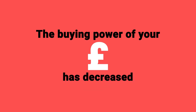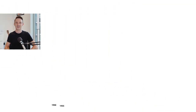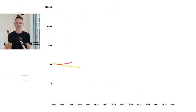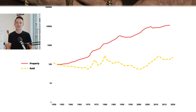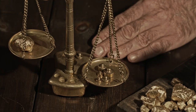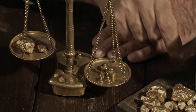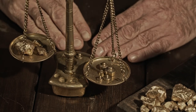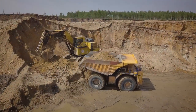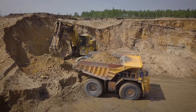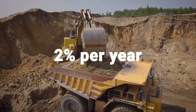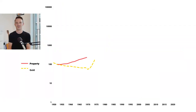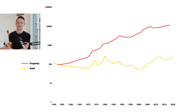Another really interesting way to demonstrate this point, especially for property investors, is to look at house prices in pounds — which is what we're used to — but also in gold. Gold has actual scarcity; it's got a long history in relation to money, and you can't suddenly double the amount you have — you have to dig it out of the ground. The gold supply increases by about 2% each year and there's not much you can do to speed that up. So gold is inherently scarce.